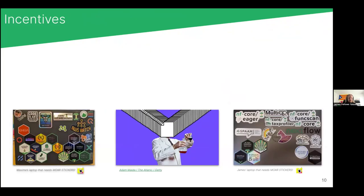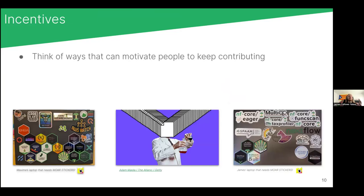When dealing with open source groups, not everyone is employed specifically to work on that pipeline — often people contribute in their spare time or only need to implement one particular part. To keep development going over a longer period and keep everyone happy, it's important to think about ways to motivate people to keep contributing. Make sure the functionality each person wants is there and that you facilitate a way for them to add it to the pipeline.